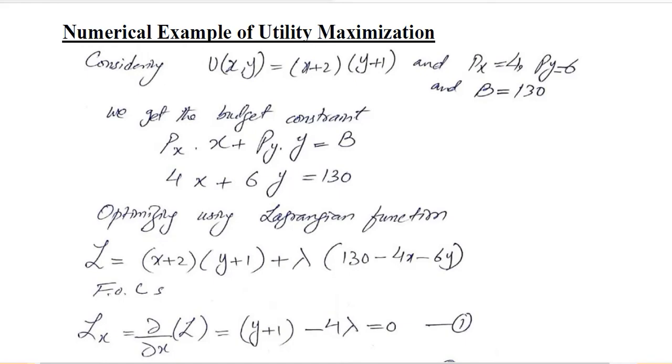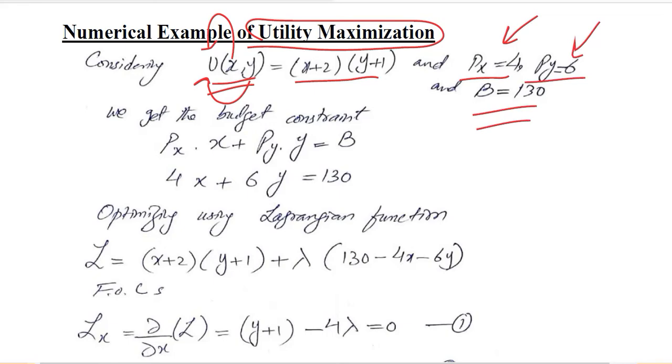The first application is about utility maximization, how we can do this in case of a numerical example. We are given a utility function that tells that our utility depends upon x and y, these two goods or services. We are also told the price of x good and the price of y good. We also know about the overall budget that we have, that is 130 currency units.